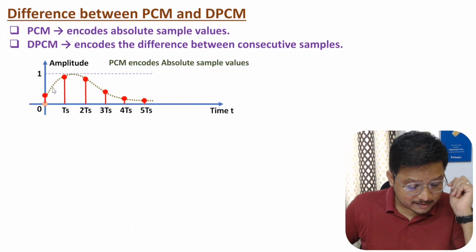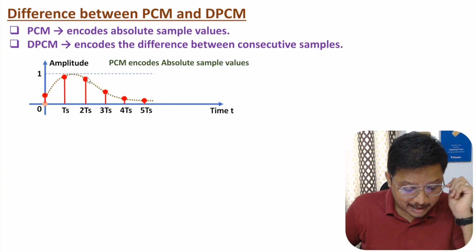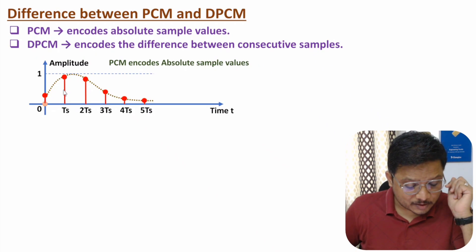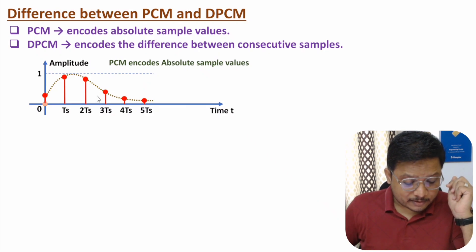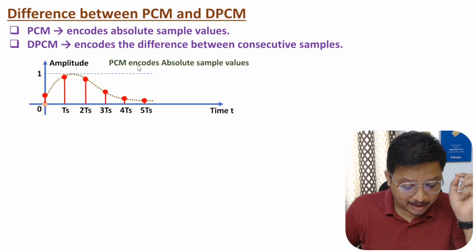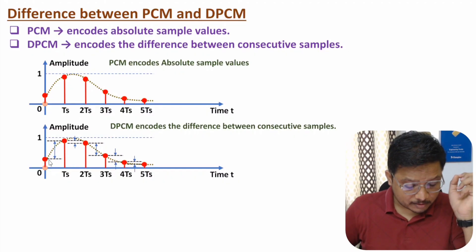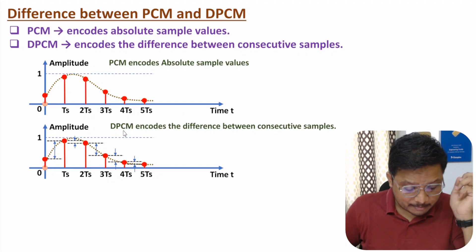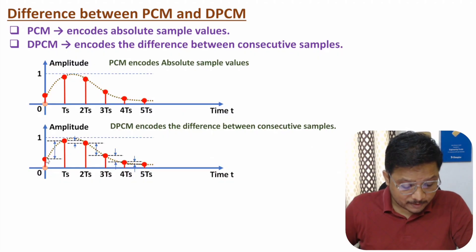Let me explain this graphically. Here we have one message signal drawn by a dashed line. In the sampling process, we take samples with respect to sampling frequency — you can observe the sample amplitudes are as per the original signal. After sampling we perform quantization, and in PCM we encode each and every sample. In DPCM, we encode the difference between consecutive samples — here you can observe the first sample and second sample, and the difference between them is what we encode.